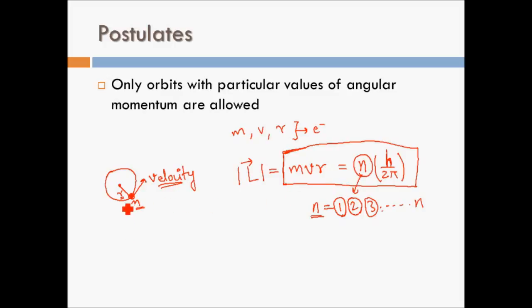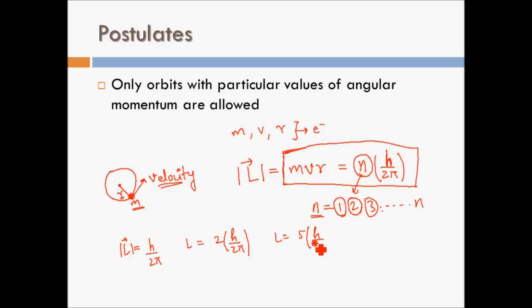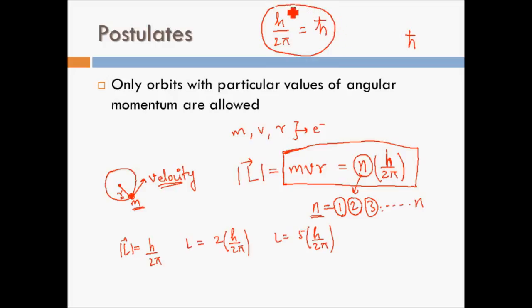The electron in the first orbit always has angular momentum of h/2π, and the electron in the fifth orbit has angular momentum of 5 × h/2π. The quantity h/2π is given a separate notation called h-cross (ℏ), written as h with a perpendicular dash through it. So h-cross equals h/2π.